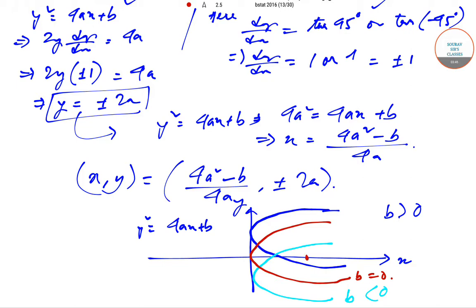So as you can see, at this point and at some point, x which is given by (4a² - b)/(4a) will do this. The tangents are making 45° angle with each other.